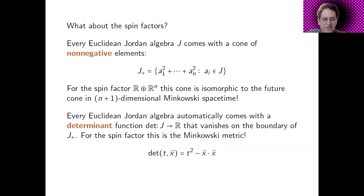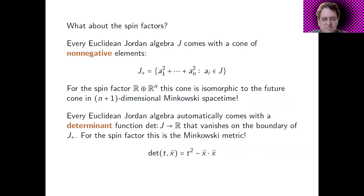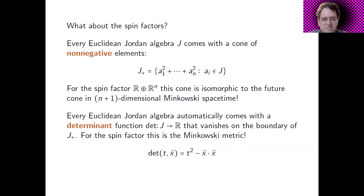Every Euclidean Jordan algebra also automatically gets a function called the determinant — a real-valued function that vanishes on the boundary of the positive cone, and which you can cook up without making arbitrary choices. In the case of matrix Jordan algebras, it's just the usual matrix determinant. For the spin factor, this determinant function is the Minkowski metric: t² − x⃗·x⃗. So the spin factors look exactly like Minkowski spacetimes in two different ways.